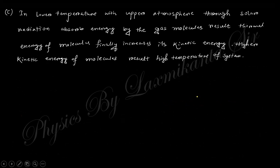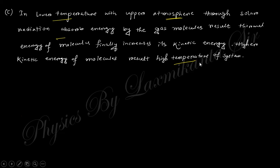For the upper atmosphere: there are a large number of gaseous molecules. When solar irradiation is incident, they absorb energy, which means their kinetic energy increases. This higher kinetic energy corresponds to higher temperature of the system. This explains the high temperature of the upper atmosphere using kinetic theory of gases.